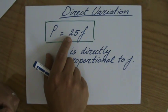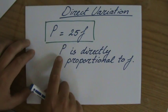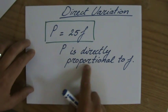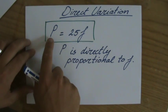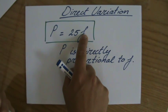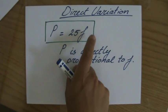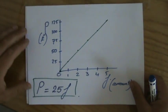We say that P is directly proportional to f. If f becomes three times as big, then P becomes three times as big.